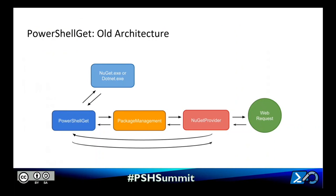As you can see with this diagram, the flow of a PowerShell Get cmdlet is pretty convoluted. With PowerShell Get 2.2.5 and below, a cmdlet such as Find-Module would start off in PowerShell Get, then need to go through package management, then the NuGet provider, then to some private functions in PowerShell Get, then back to the NuGet provider, and then back to the calling public function in PowerShell Get. Because the two are separate repositories — one written in PowerShell and the other C#— stepping through a debug scenario is a huge headache. Often, a bug in one repo would also require an update in the other.